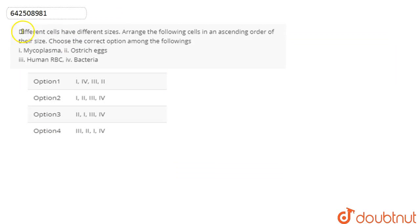We will talk about this question. In this question, we are asked that different cells have different sizes. Arrange the following cells in an ascending order of their size. Choose the correct option among the following. We are given the mycoplasma, which is a prokaryote, then the ostrich egg, human RBC and the bacteria.